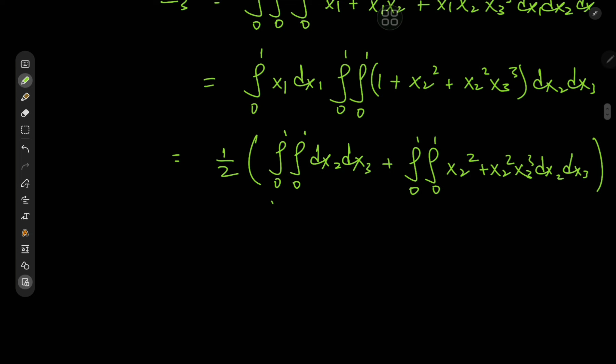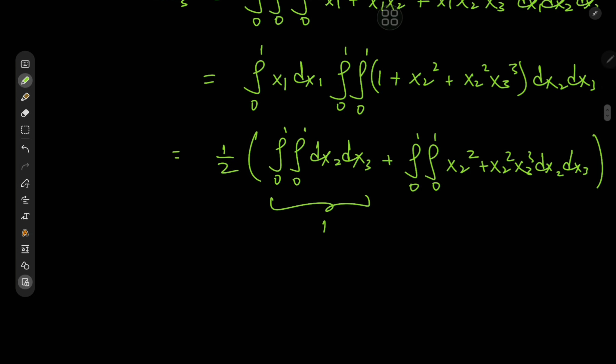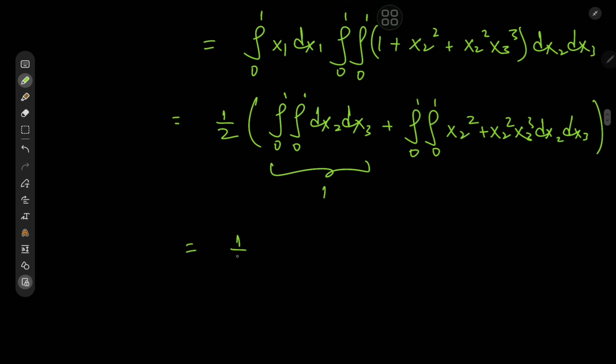The first term here is 1 obviously, and then from the double integral we can factor out x2^2. So we have integral 0 to 1 x2^2 dx2 times integral 0 to 1 (1 plus x3^3) dx3, where again we made use of the fact that we have a function of one variable times a function of the other variable with respect to which we're integrating.